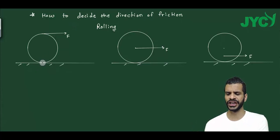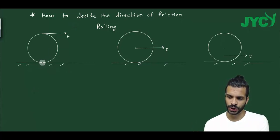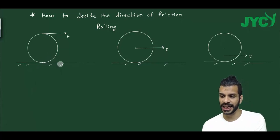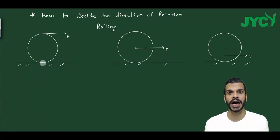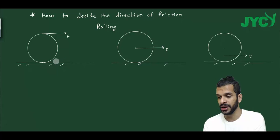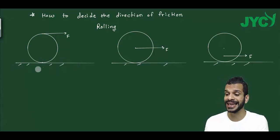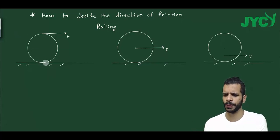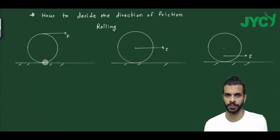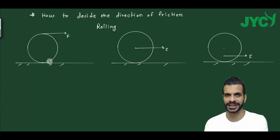How to decide friction direction? Look, whether the ground contact point tends to move forward or backward — that decides where the friction will act. If the point tends to move forward or backward, that decides the direction of friction. So we need to observe the acceleration of the center of mass and alpha for that contact point.